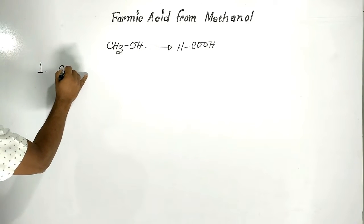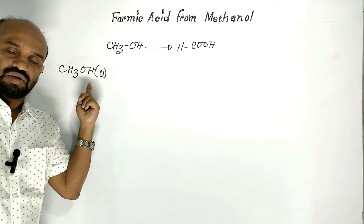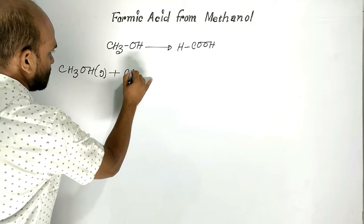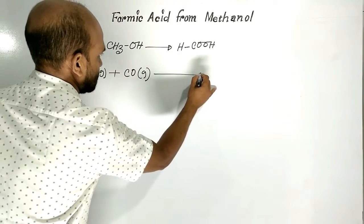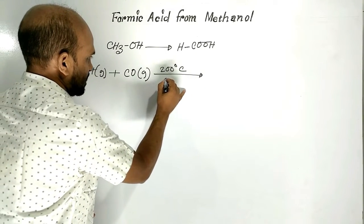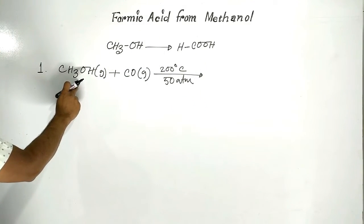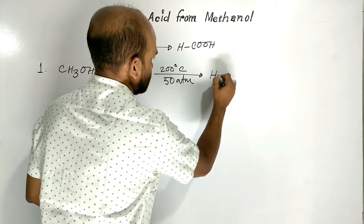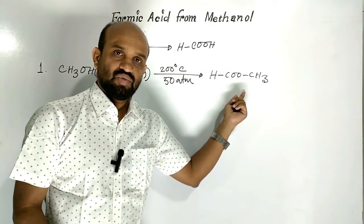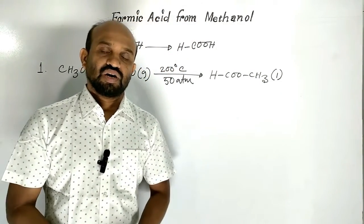Step one. Methanol is liquid at room temperature, but here methanol vapor is treated with carbon monoxide gas at 200 degrees Celsius and at 50 atmosphere pressure. Under these conditions, methanol converts to methyl formate — a kind of ester which is liquid under ambient conditions with an agreeable odor.